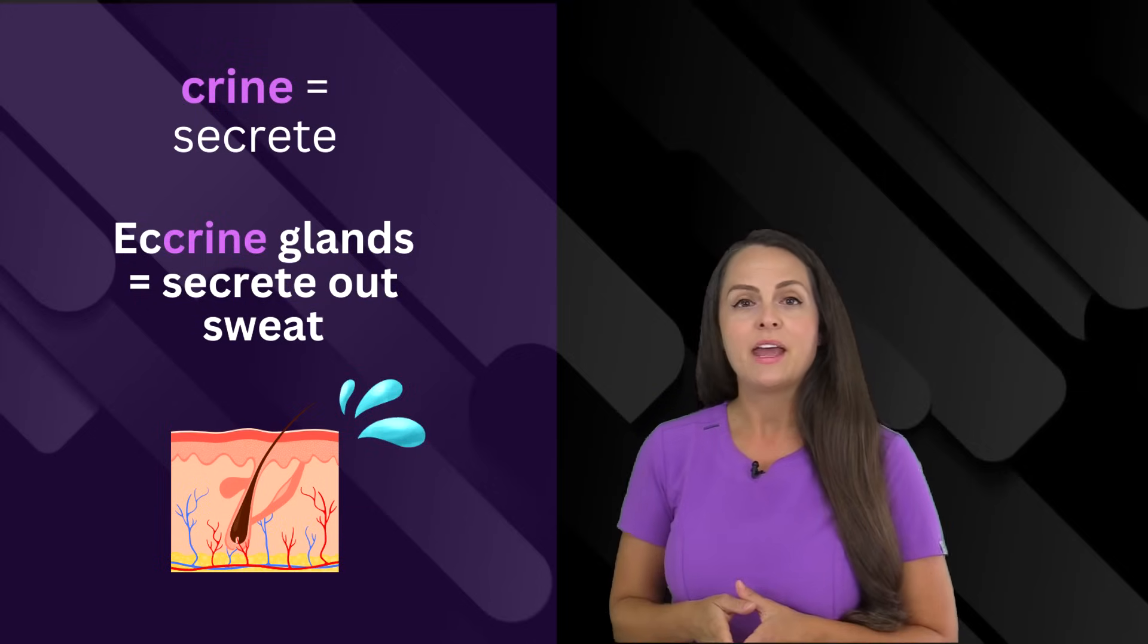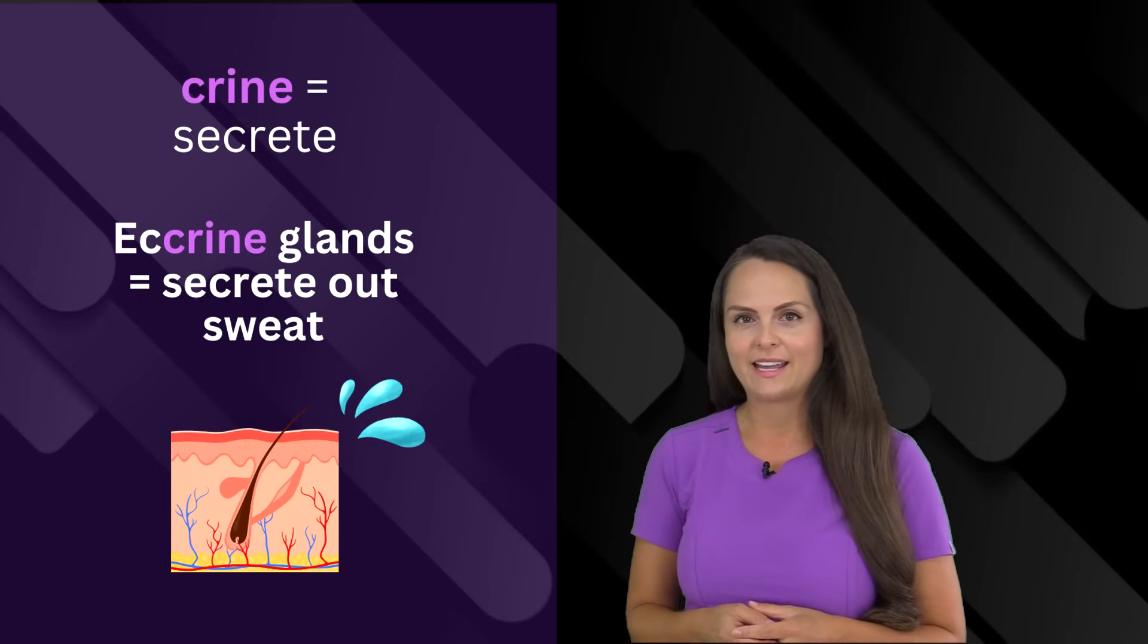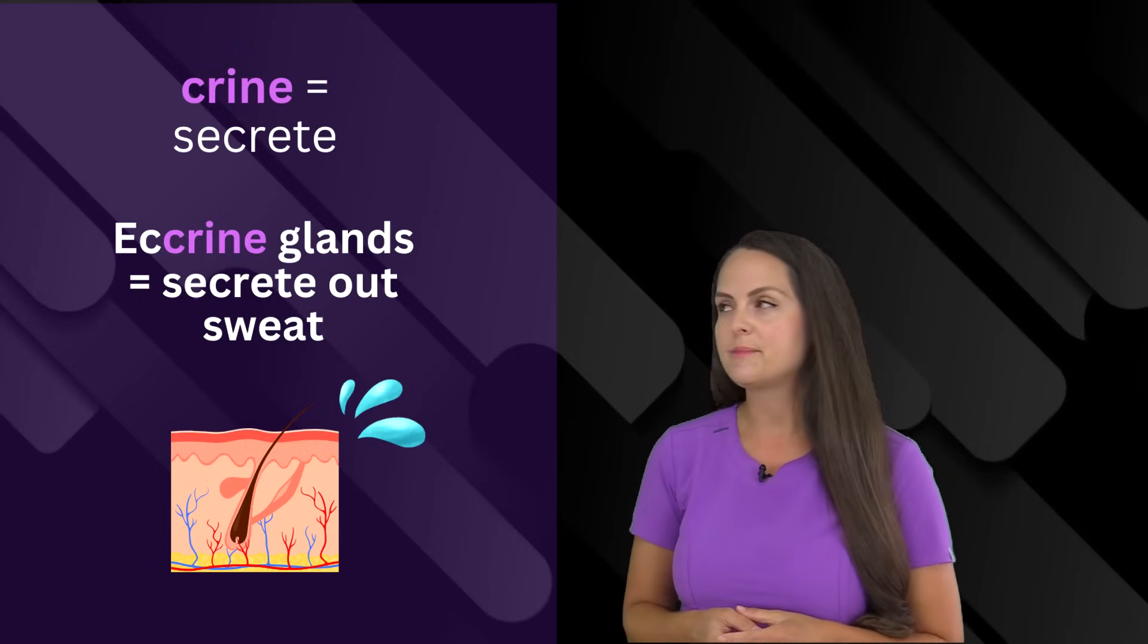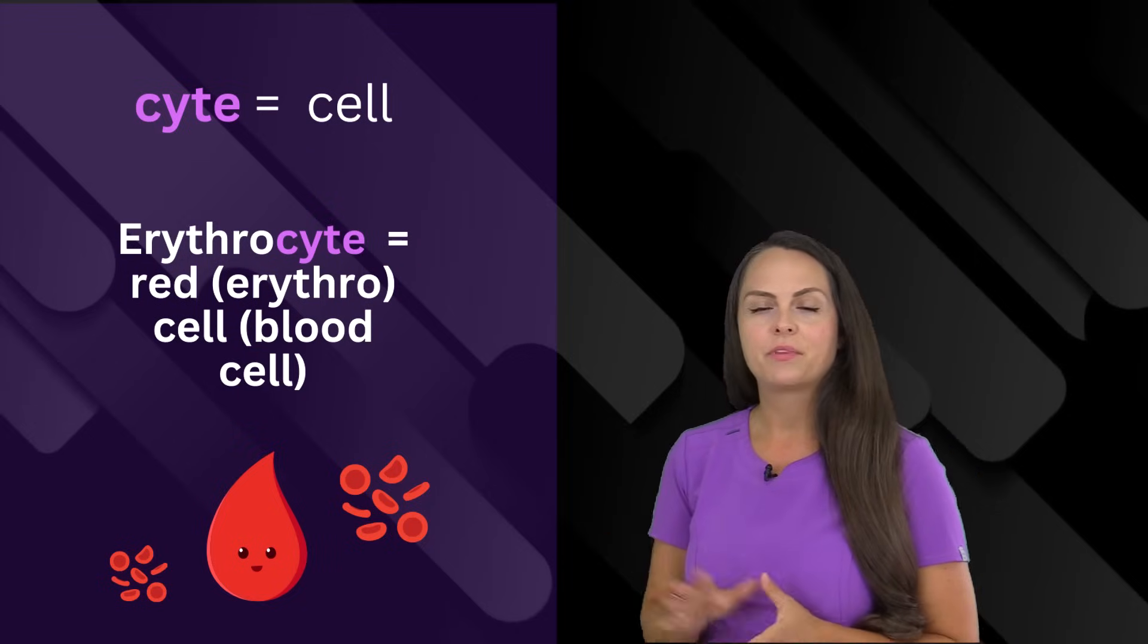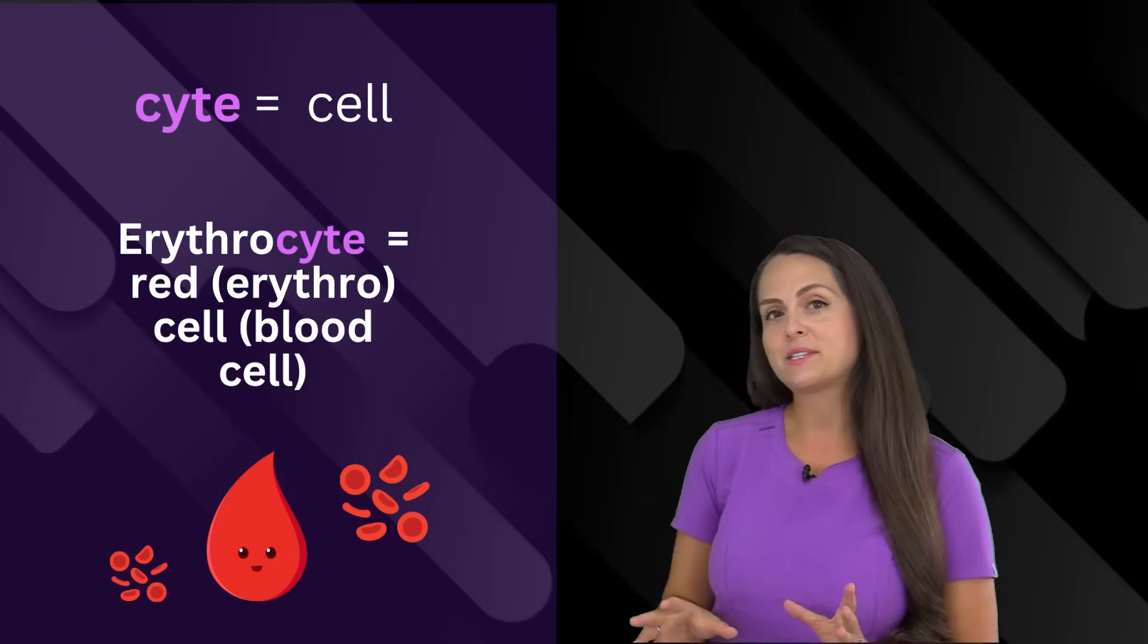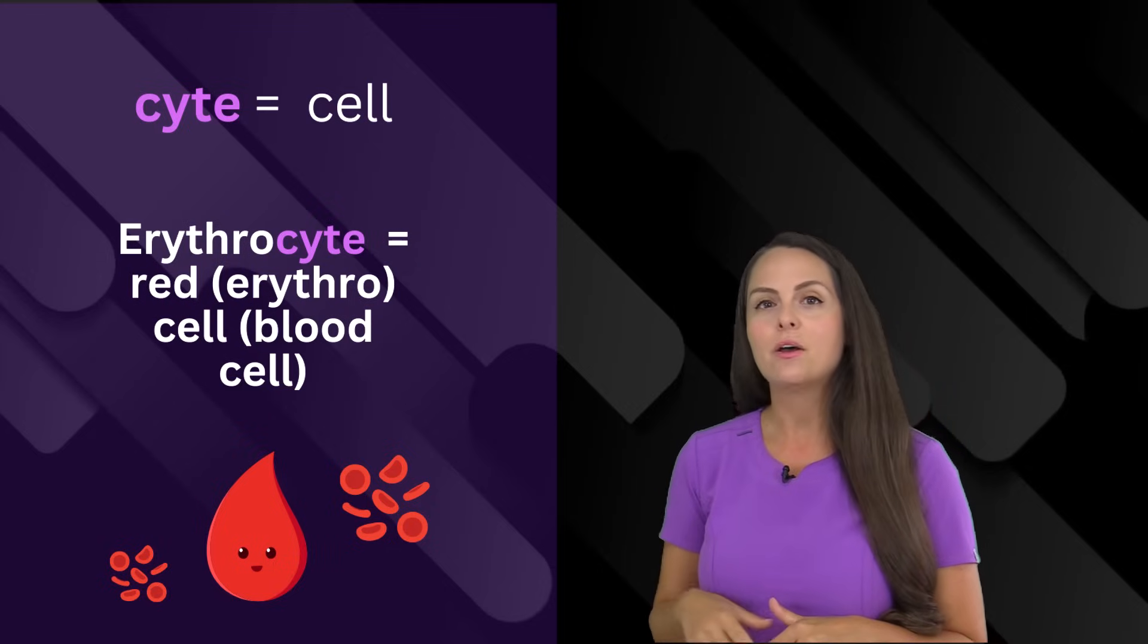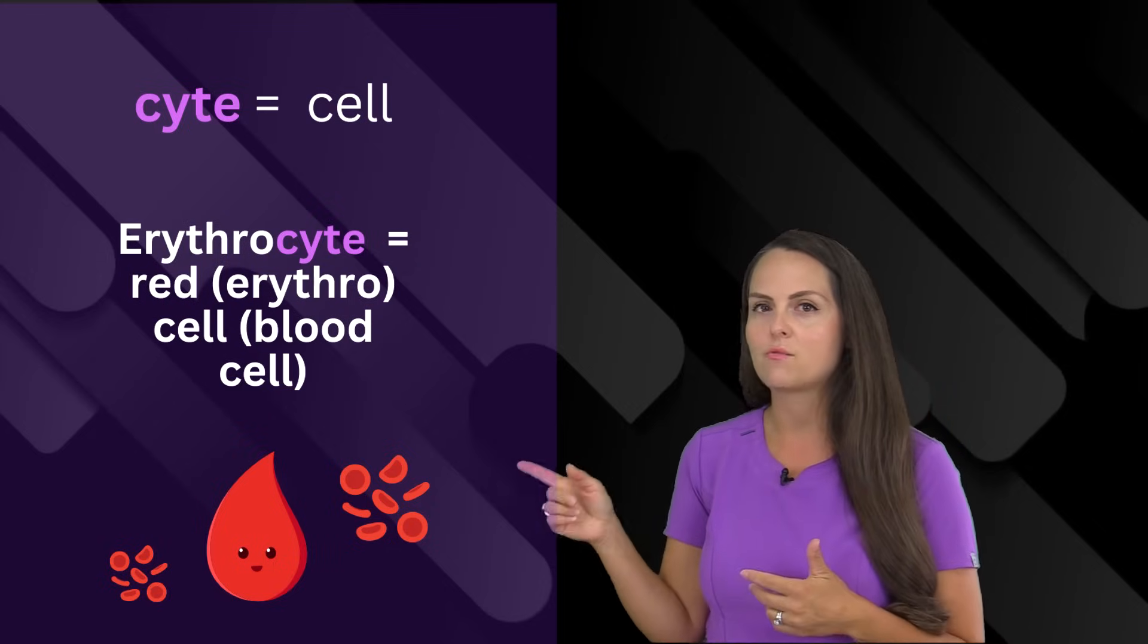The next suffix is crin. This means to secrete. In our body, we have eccrine glands, and these glands secrete sweat. Cyte means cell. When I say the word erythrocyte, I'm talking about a cell, particularly the red blood cell, because that's what erythro means, that prefix, red.